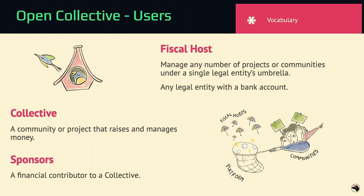The main thing to understand about Open Collective is there are three types of users. There's the fiscal host — the legal entity that manages multiple projects or collectives and allows money to pass through. The fiscal host is any legal entity with a bank account, and money passes through the fiscal host into collectives. That's how a collective like Drupal Camp Asheville has legal status, because the money goes through a 501c3.